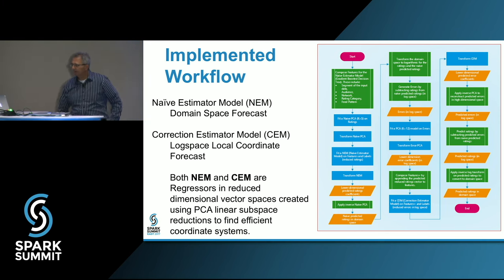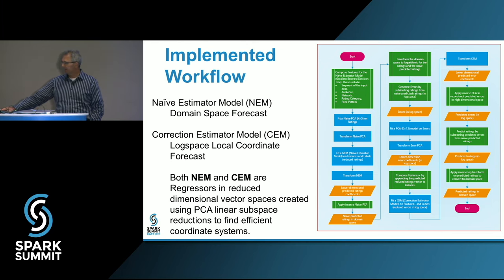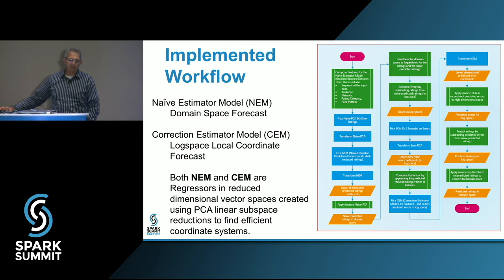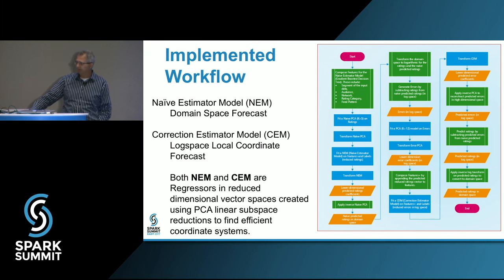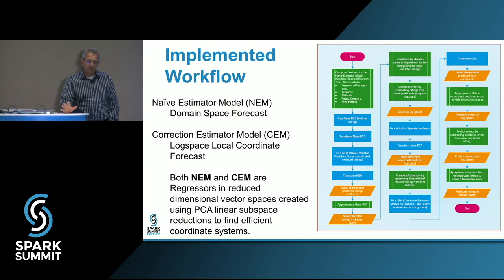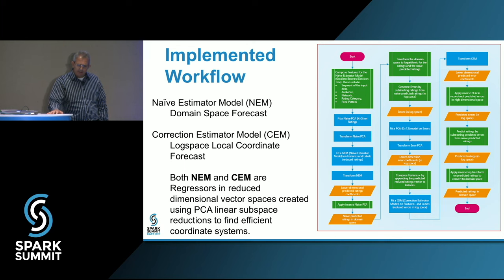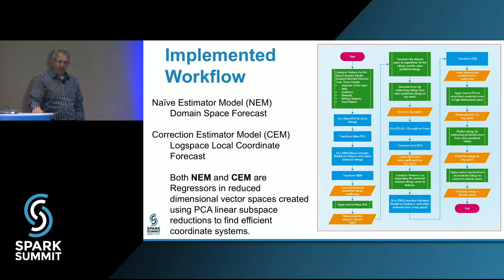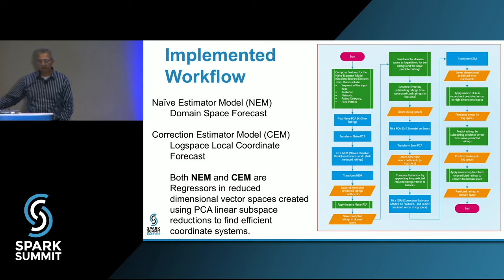Thank you, Mike. Let's look at some details of our predictor-corrector model implementation. This flowchart represents the training phase of the model — as you can see, there are a lot of steps and they're quite complicated. Generally, it's comprised of the naive estimator model in the domain space, the correction estimator model in the log-like space, and we have a PCA space reduction and inverse PCA transformation to get back to the original domain space.